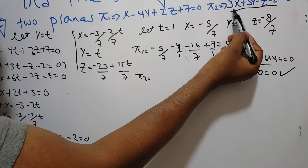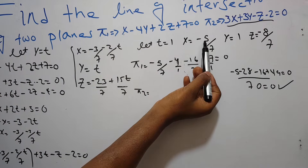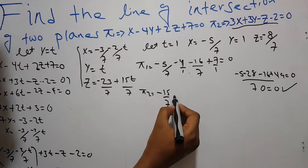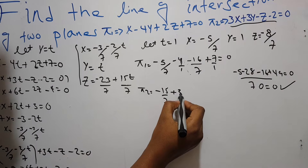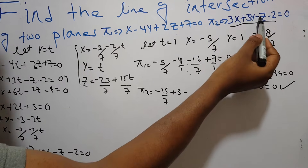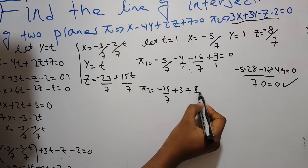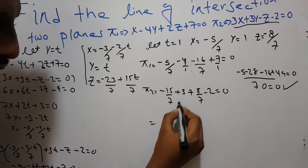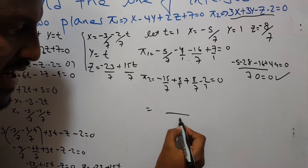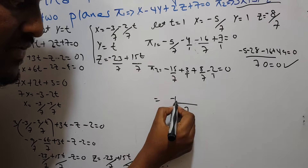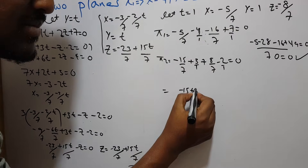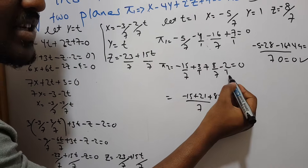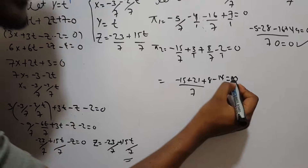Checking in the second plane equation: 5 times x equals negative 5 over 7, plus 3 times y equals 3 times 1 equals 3, minus z equals minus of minus 8 over 7, plus 8 over 7, minus 3 equals 0. Evaluating: 1 times negative 50, plus 7 times 3 equals 21, plus 1 times 8 equals 8, minus 7 times 2 equals 40. Zero equals zero. Verified.